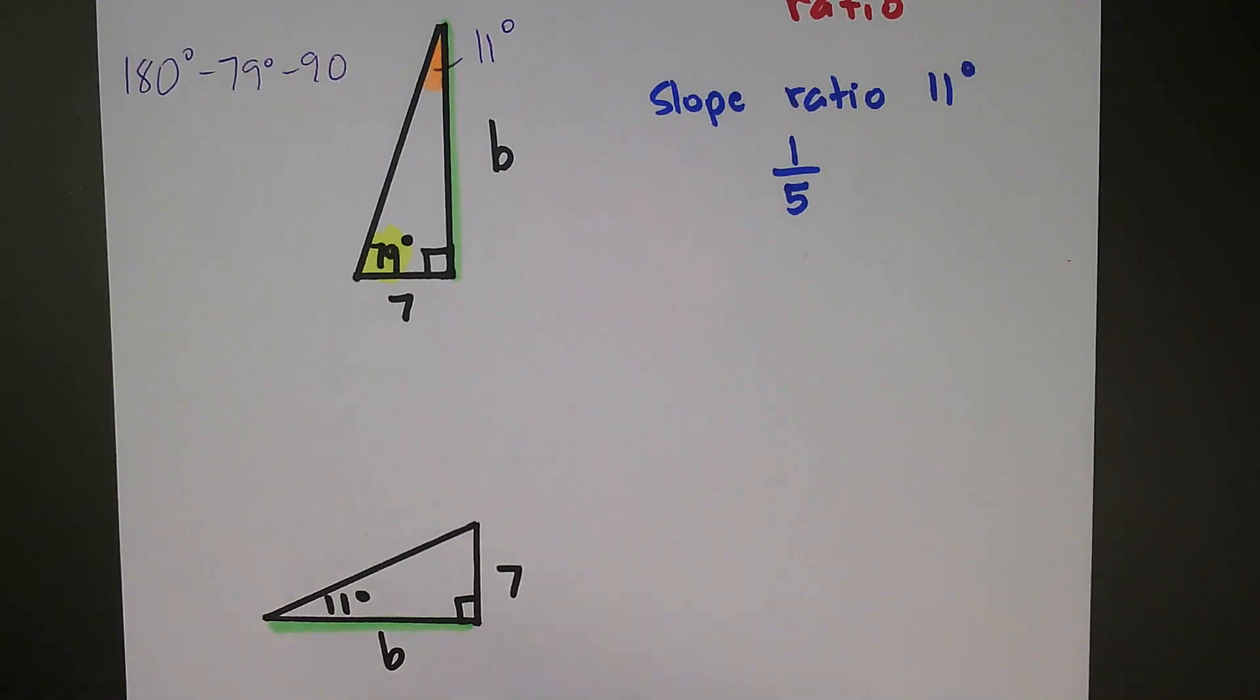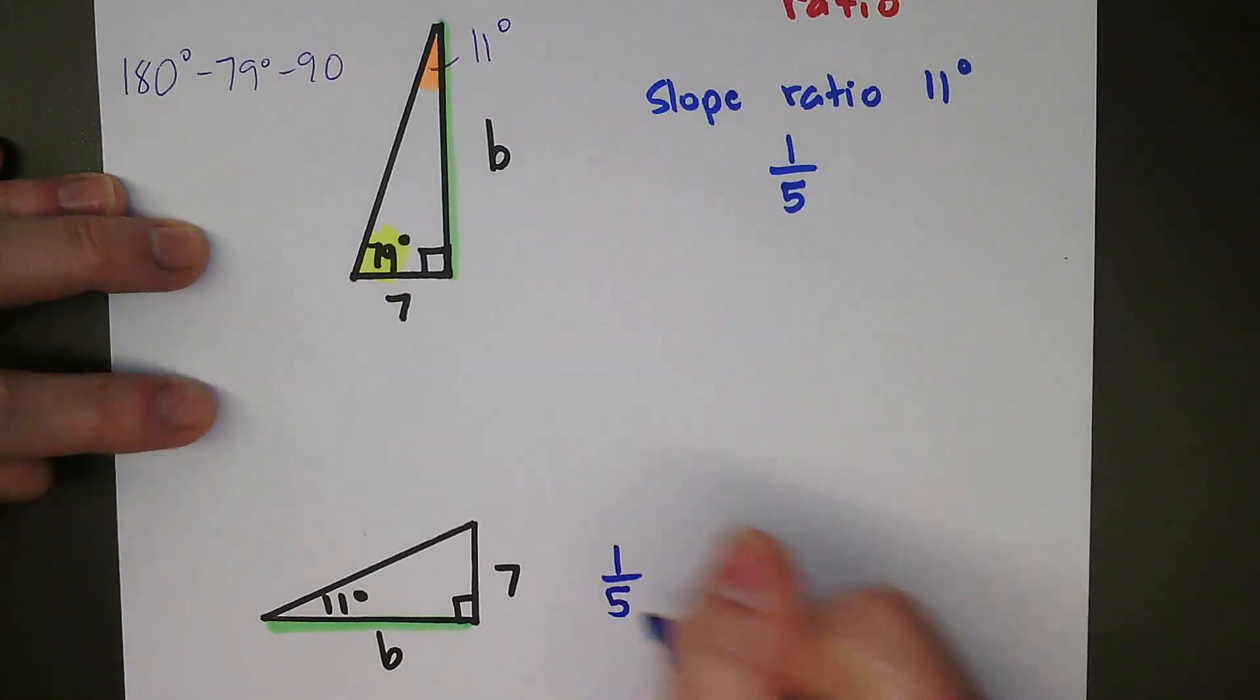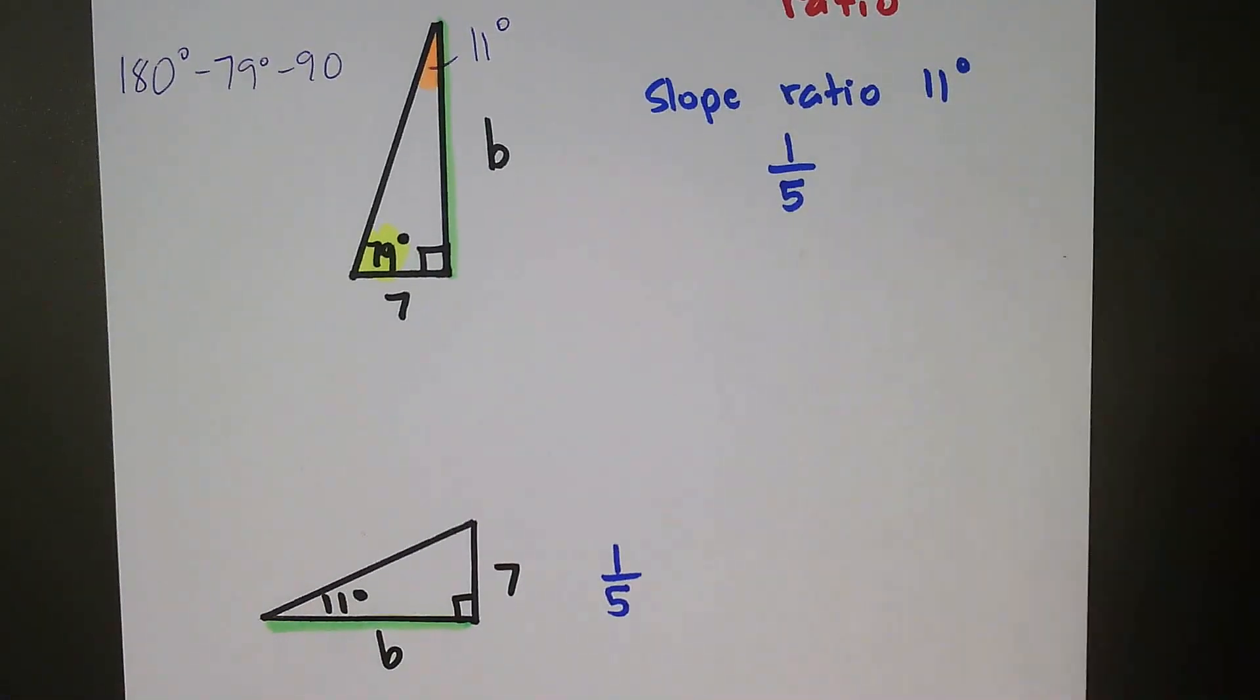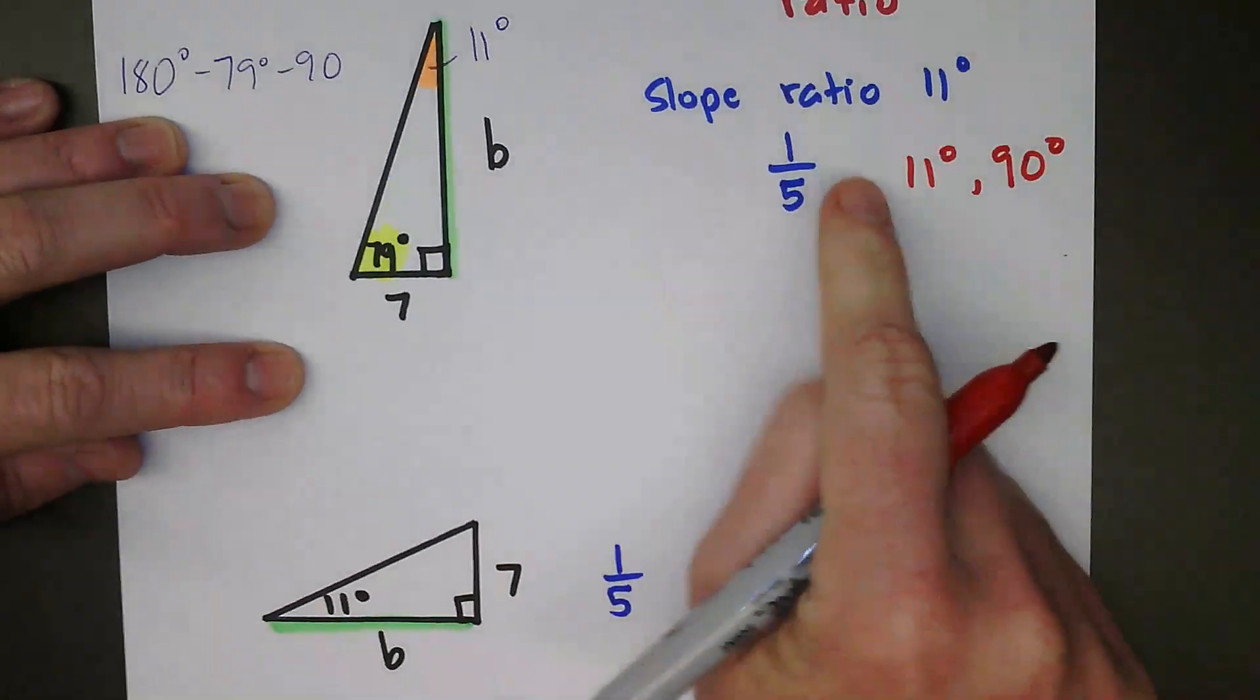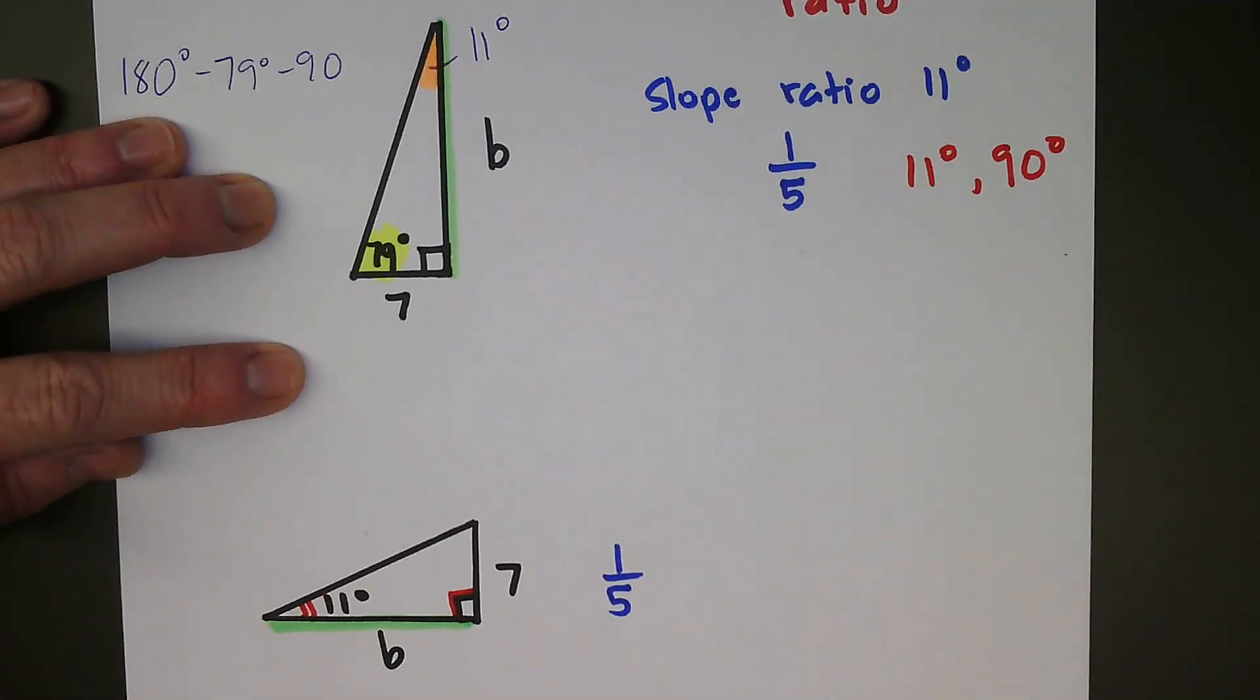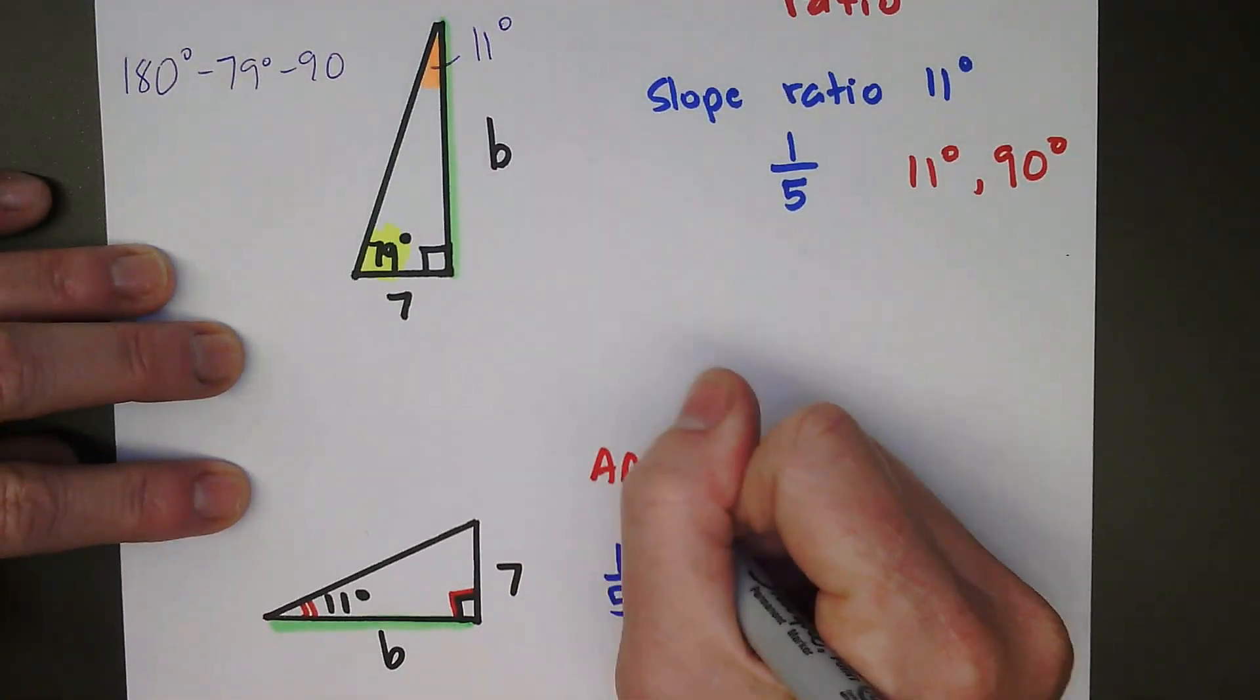And then from here, all we do is we take the slope ratio that we know. The slope ratio for 11 degrees is 1 over 5, and then because it's a similar triangle, any slope ratio with 1 over 5, well, that's going to have an 11-degree angle, and it's going to have a 90-degree. If it's a slope ratio, it's going to have 90 degrees. Well, this one has the same thing, our 90-degree angle right there and our slope ratio of 11 degrees. So these triangles are similar from angle-angle similarity.